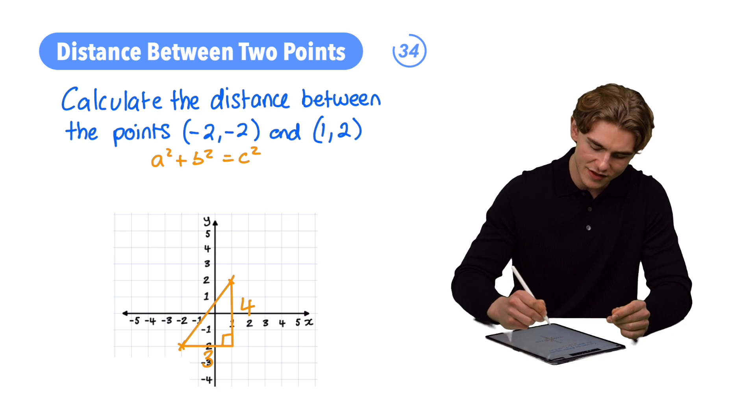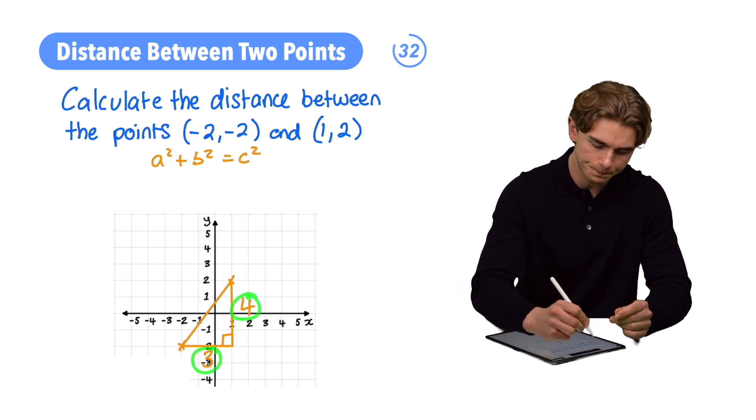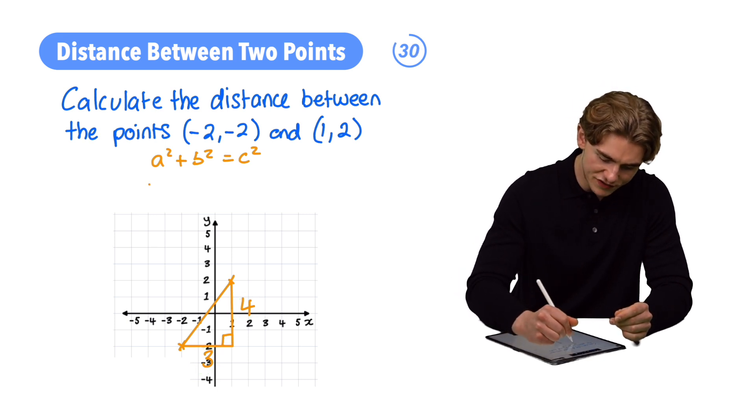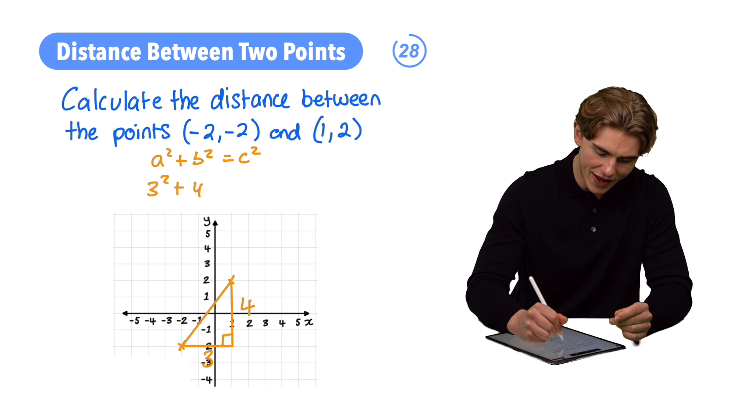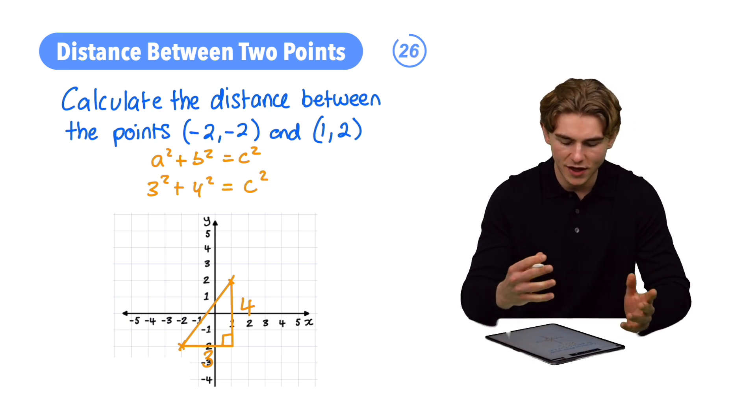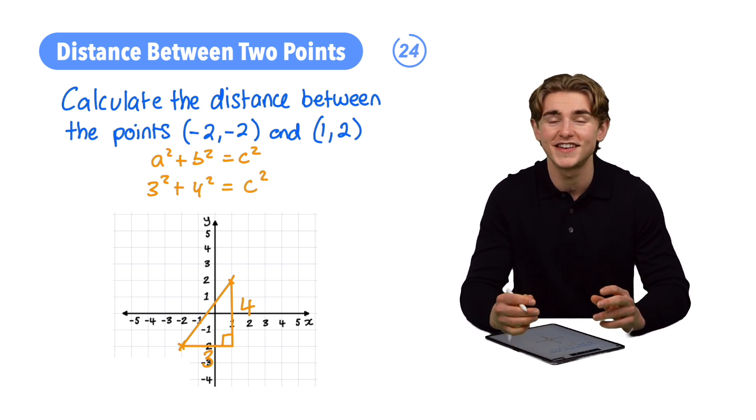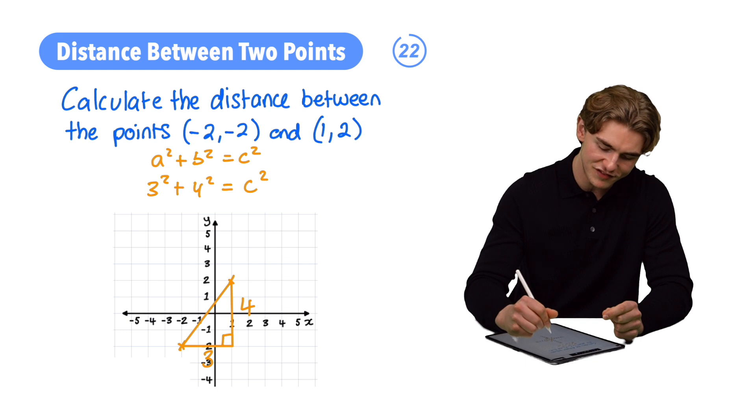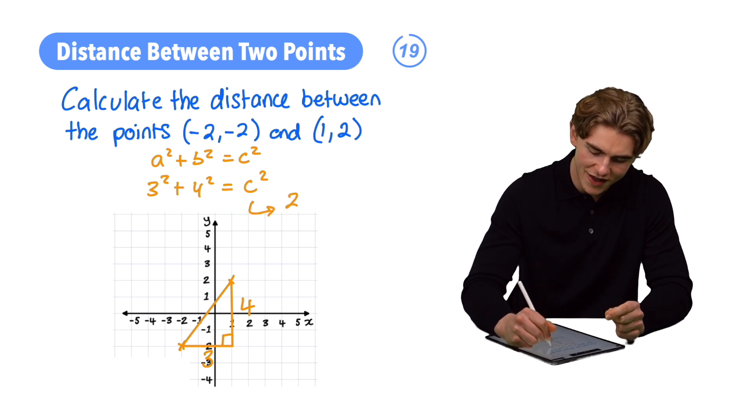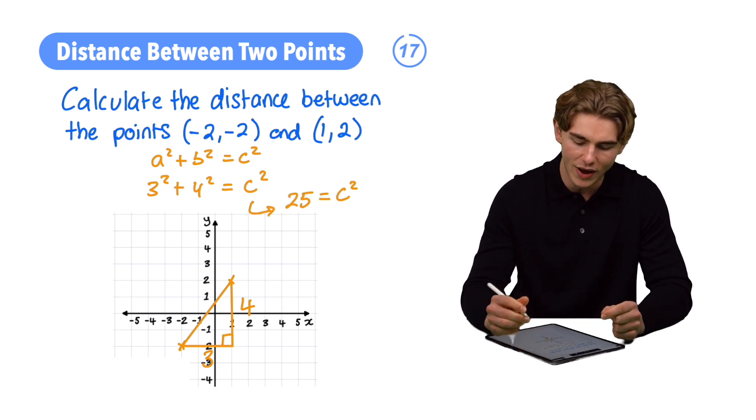We're going to substitute in the values of 3 and 4. That gives us 3² + 4² = c². Three squared is 9, four squared is 16. Nine plus 16 is 25, so 25 equals our hypotenuse squared.